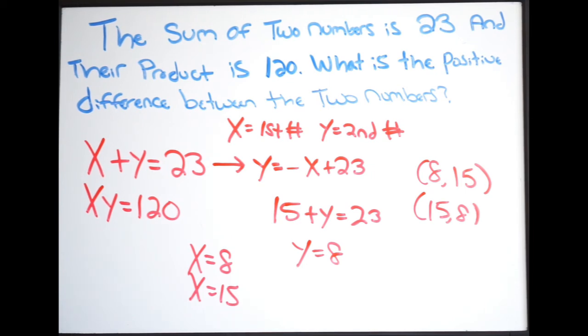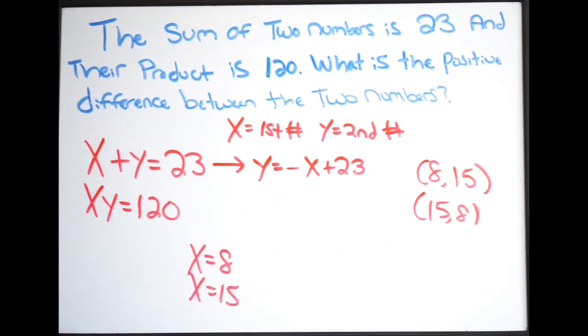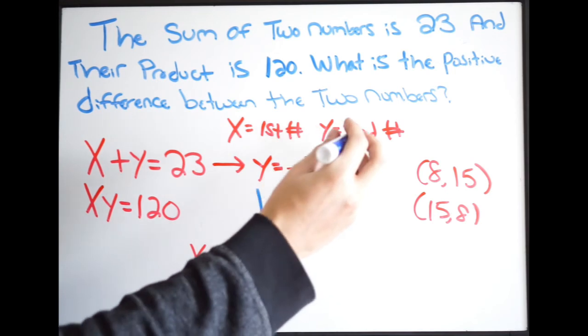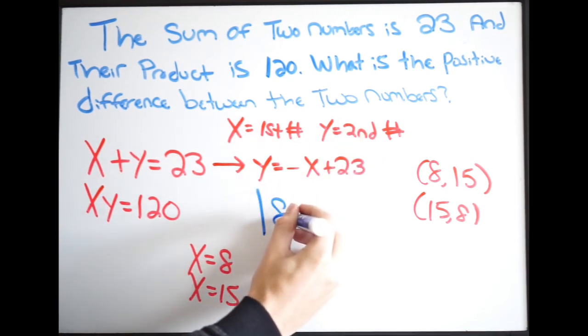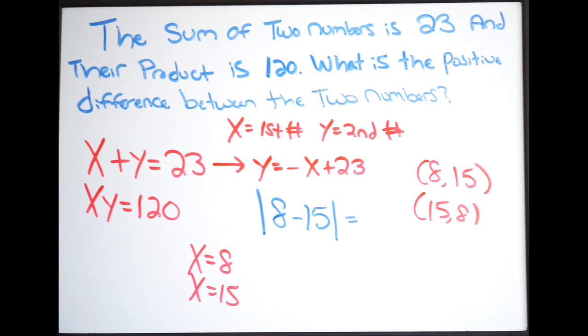So what we want to do is find that last part now. It says, what is the positive difference between the two numbers? So let's just erase this. So if we want to find the positive difference, we're going to use absolute value. And you can pick any solution you want. You can pick this one or this one. We'll use both so you can see how it's going to work out. The positive difference. I'm going to use absolute value. And then I'm going to have 8 minus 15. And doing this, well, 8 minus 15 is going to give us negative 7. But the absolute value of negative 7 is going to give us 7. So there it is.